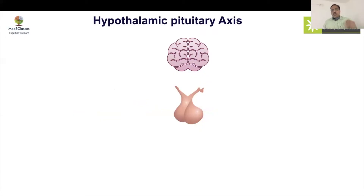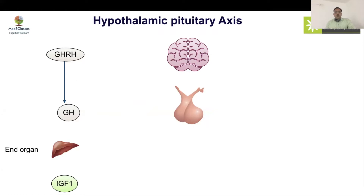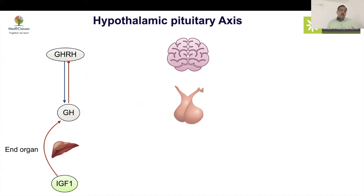The hypothalamic-pituitary axis controls a large number of hormones across the body and its end organs. GHRH controls growth hormone, which acts on the liver to produce IGF-1. There is a reciprocal effect of growth hormone suppressing GHRH secretion, and there is also suppression of growth hormone by IGF-1.